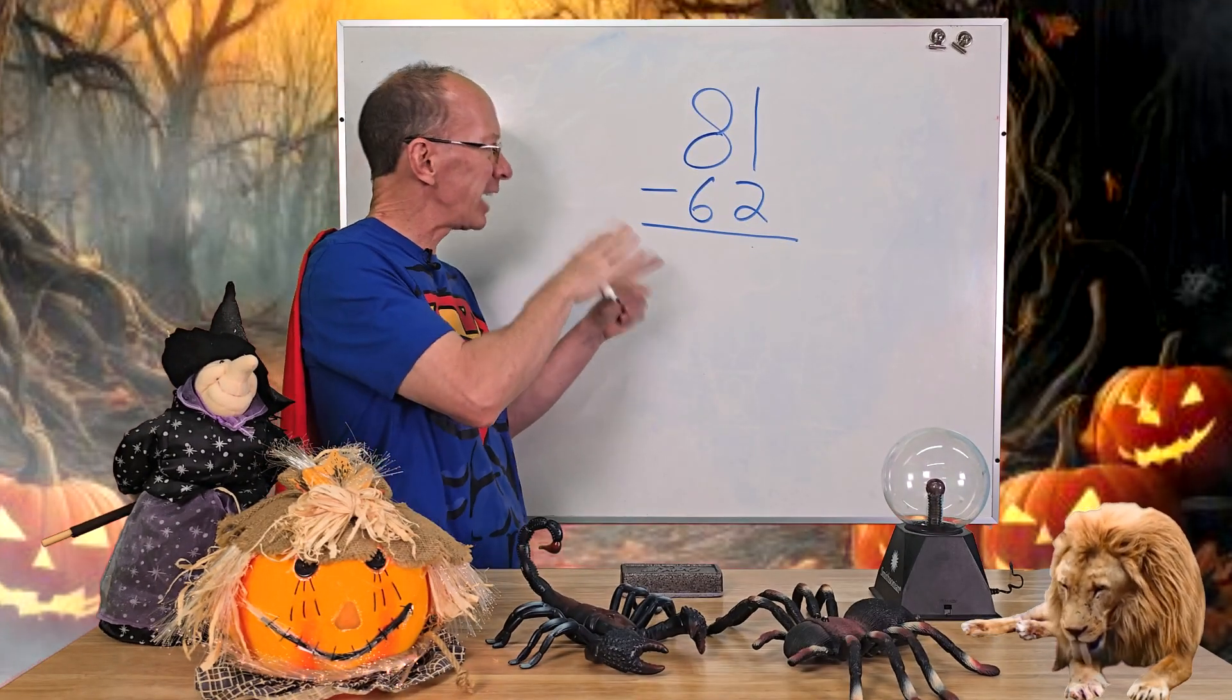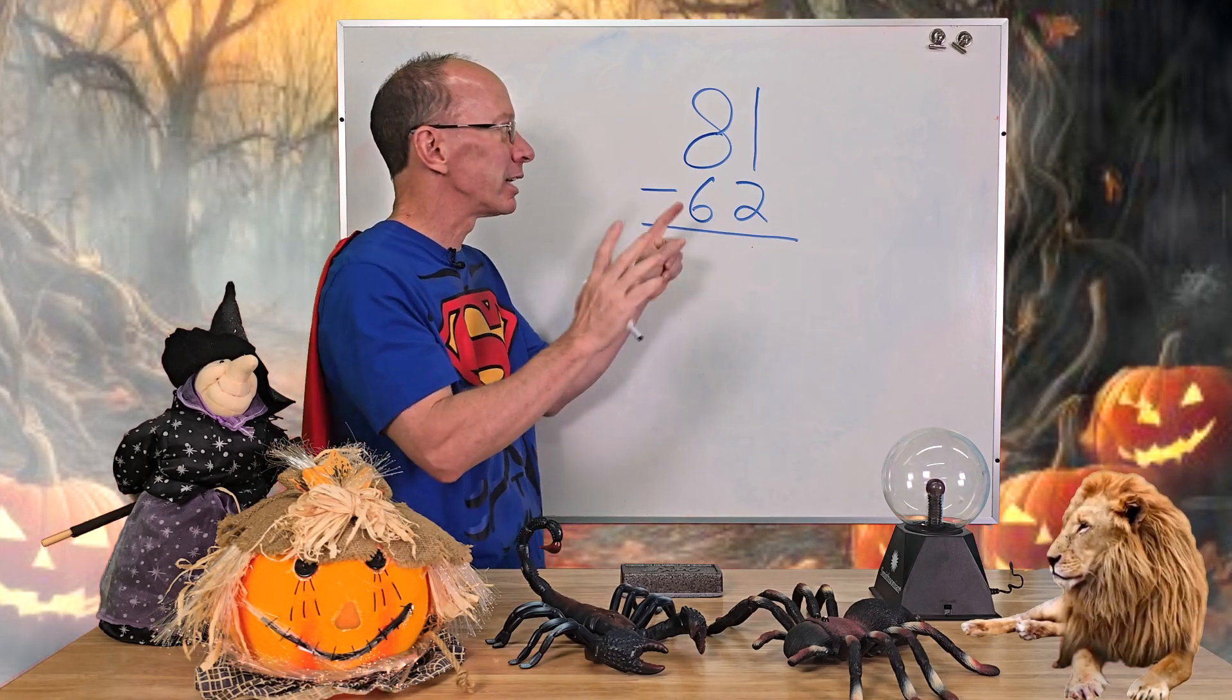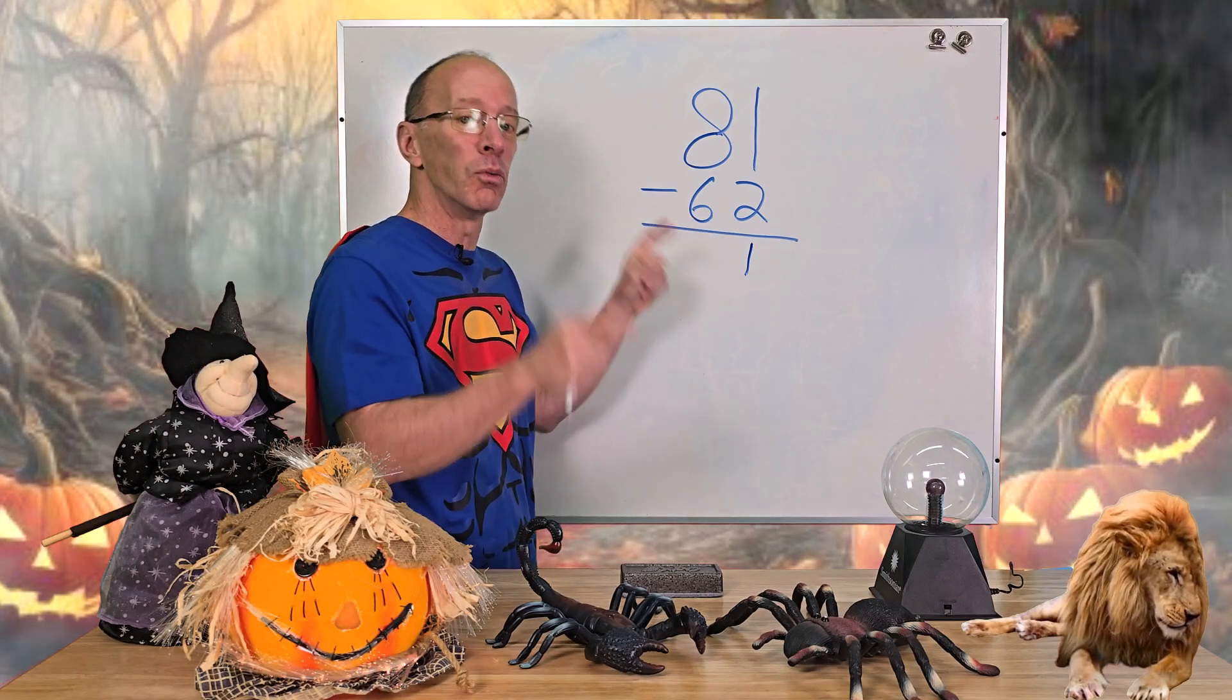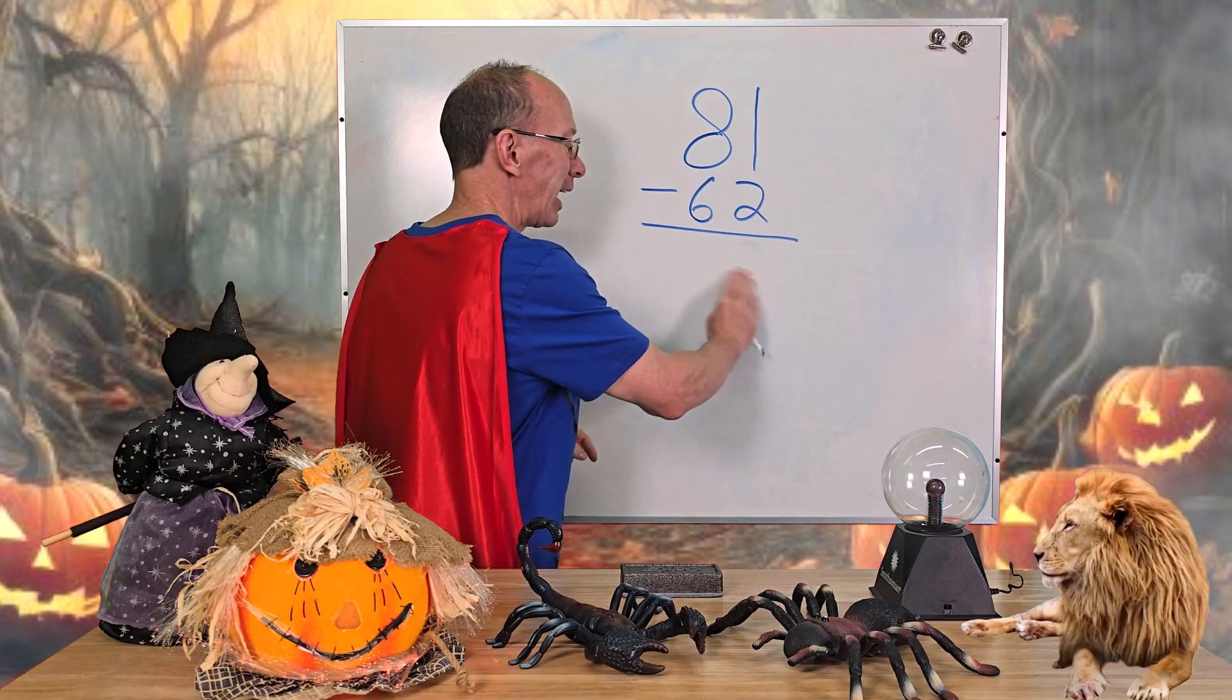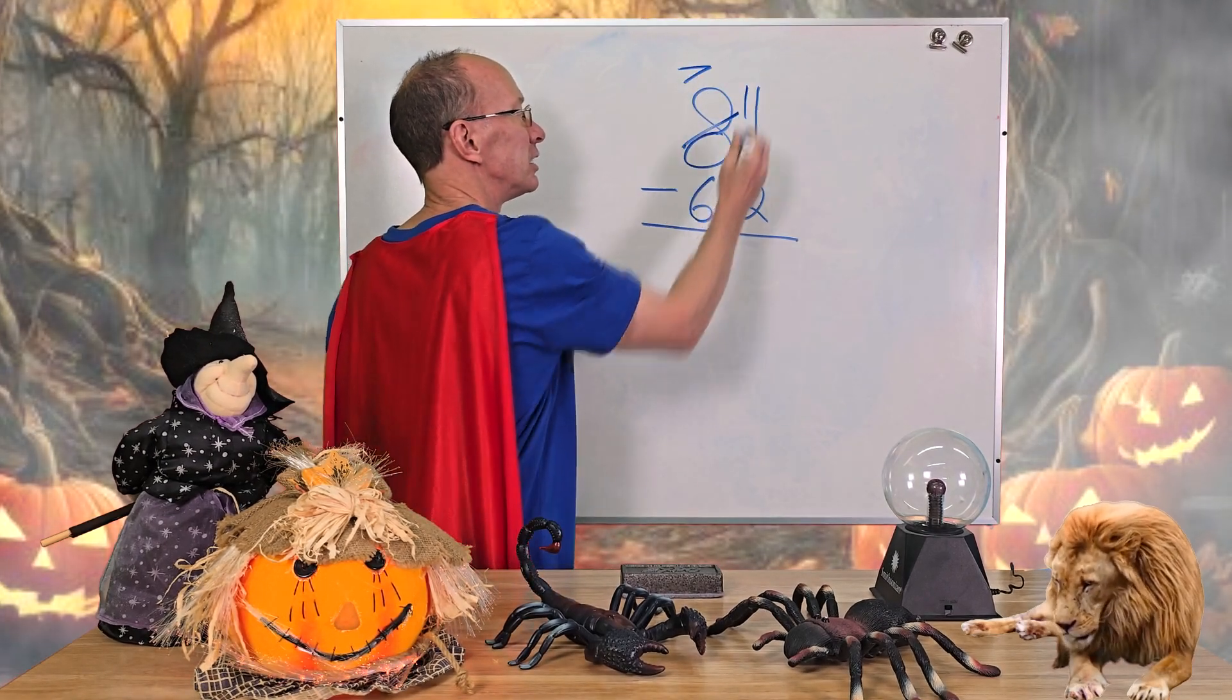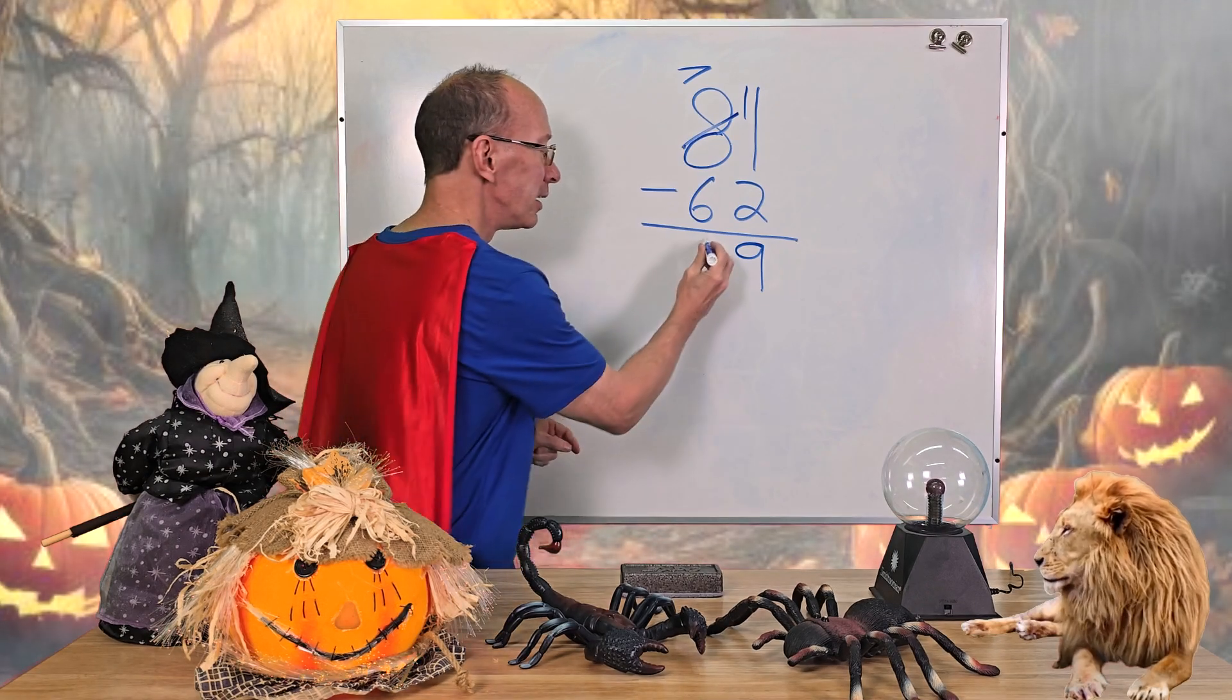All right, this is our challenging last problem right here and is 81 minus 62. Now, when some of my students are doing the math problems and they're doing really quickly, they just all of a sudden put down one minus two and they just put down one. And then I have to remind them again, say it to yourself. One minus two, one take away two, one cookie, you're taking away two. It's not going to be one. No. So you have to make sure to make that top number bigger. Always look at that. So I need to borrow one from the eight. This will be a seven. This turns into a 11. 11 minus two. Yeah, you're right, it is nine. Seven minus six, one. There's our answer.